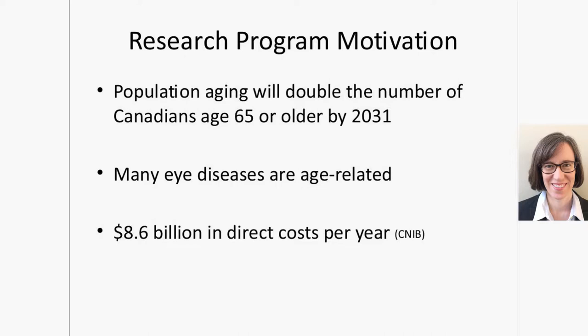As many of you know, our population here in Canada is aging, so a larger proportion of people are now 65 and older, and that proportion keeps going up. This is important for eye disease because so many eye diseases are age-related. Diseases like cataract or age-related macular degeneration increase dramatically with age, and it's very expensive to the healthcare system to treat these diseases — estimated that we spend billions of dollars per year.